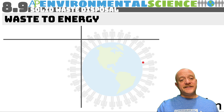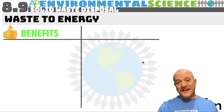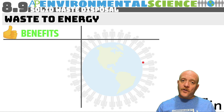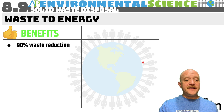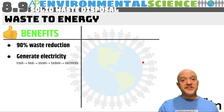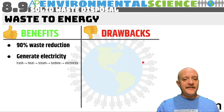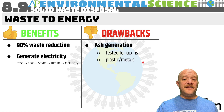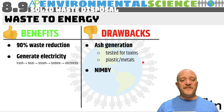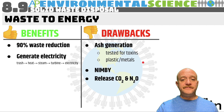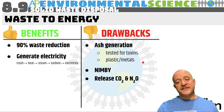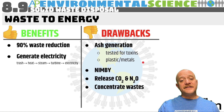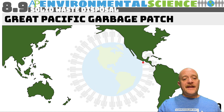Waste-to-energy is when you incinerate waste to generate electricity, similar to burning coal to boil water and produce steam. Benefits include a 90% reduction in waste volume and electricity generation. Drawbacks include generating ash that must be tested for toxins, the presence of plastics and metals, NIMBY concerns about burning trash nearby, and emissions of carbon dioxide and nitrous oxide that concentrate waste products.